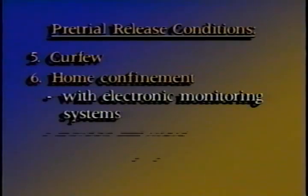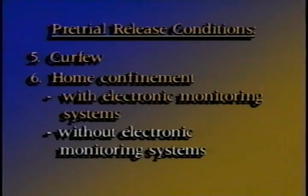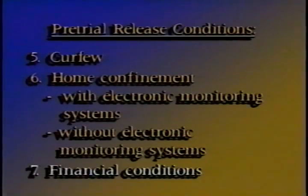Home confinement without electronic monitoring — sometimes referred to as house arrest — confines the defendant to a specific residence without an electronic monitoring system. The security of this approach can be enhanced by third-party custody and supervision by a pretrial services officer. As noted in the monograph, a variety of factors may diminish the reliance that can be placed on this alternative.